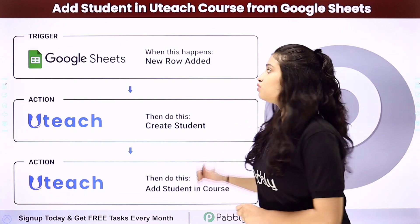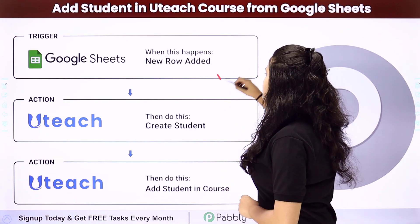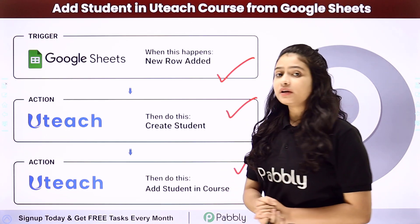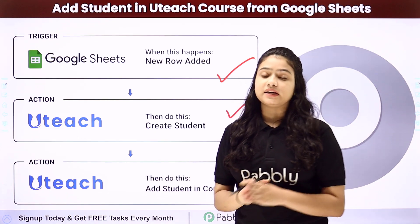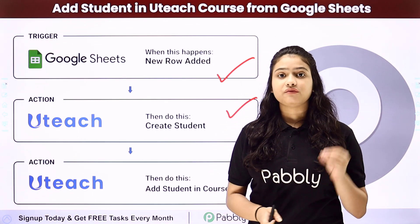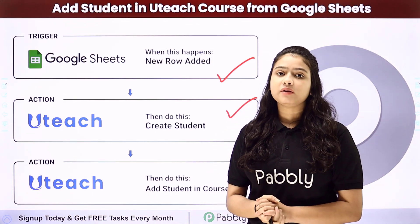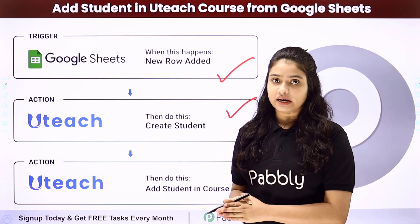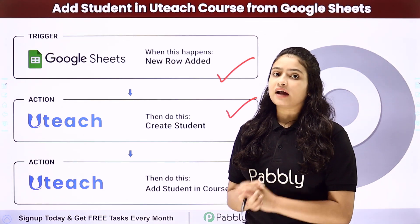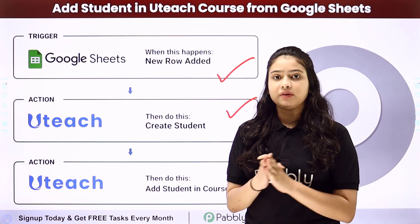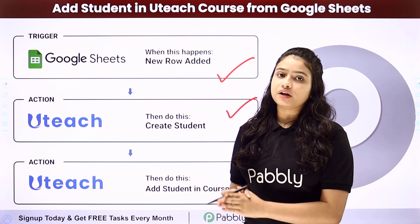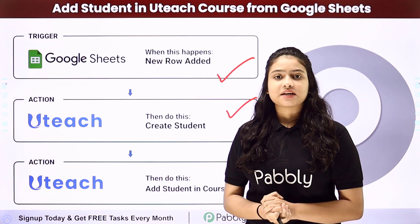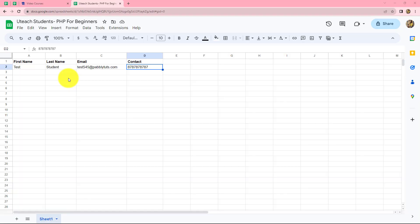We have Google Sheets as our trigger and Uteach as our action. We will connect both of them using Pabbly Connect so that whenever a new row is added in Google Sheets, automatically first the user will be created in Uteach and then the same student will be enrolled for a particular course. To learn the entire process step by step, let me take you to my screen.